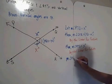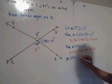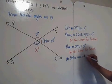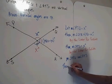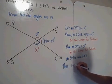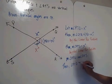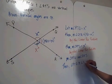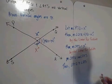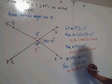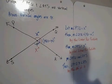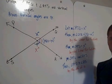So the measure of angle PTQ equals the measure of angle RTS. Thus, angle PTQ is congruent to angle RTS. This is by the definition of congruent. So we've proven that vertical angles are, in fact, congruent.